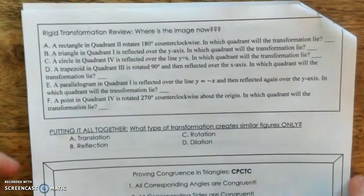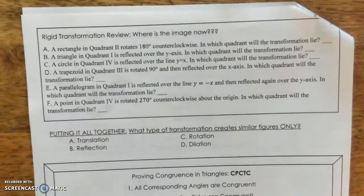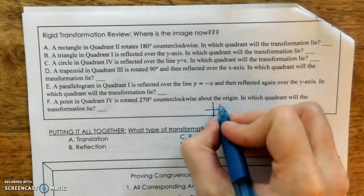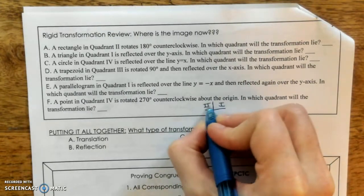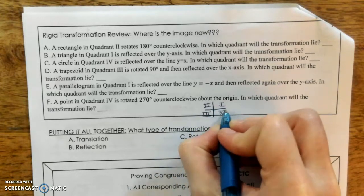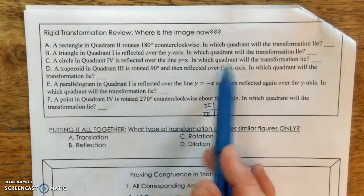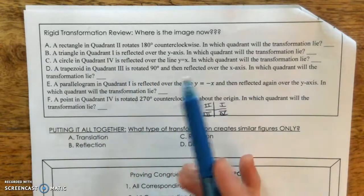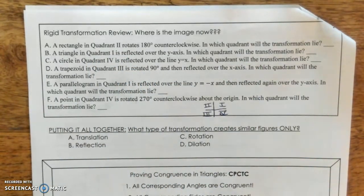Go ahead and flip the page over. Take a minute and try the rigid transformation review — where is the image now? I'll remind you of the quadrants: quadrant one, two, three, and four. Picture a coordinate plane. Pause the video and try A through F — figure out what quadrant the transformation will land in. When you're ready, start it back up.